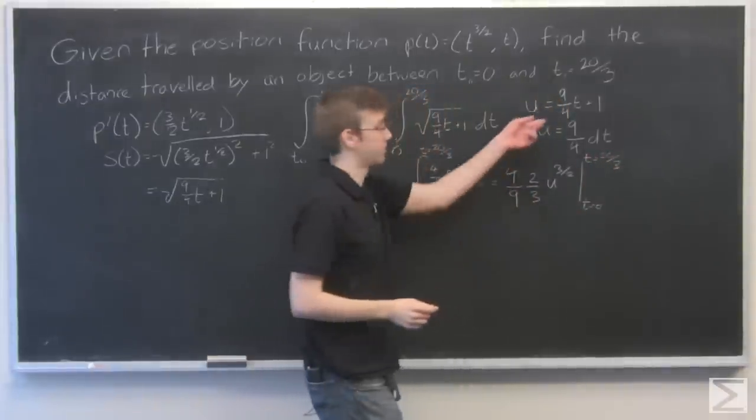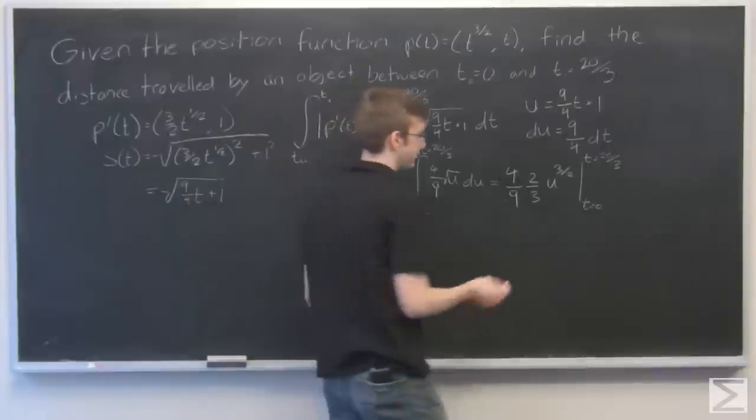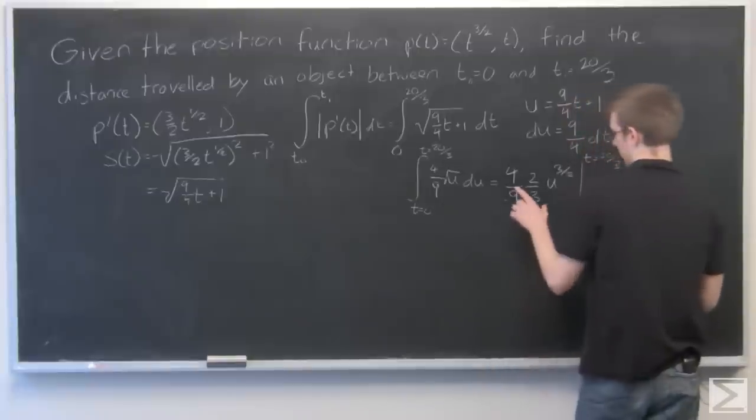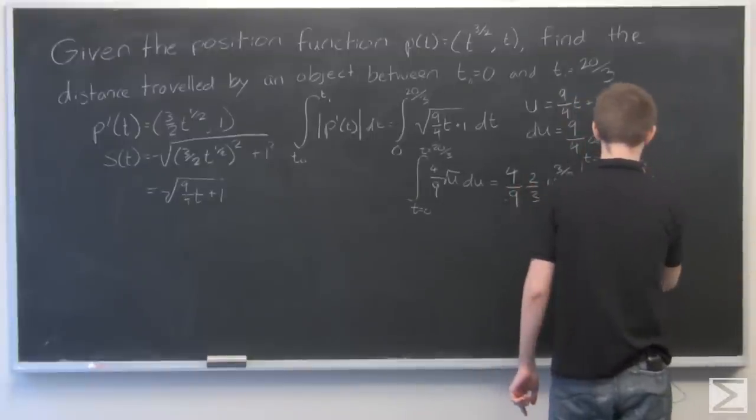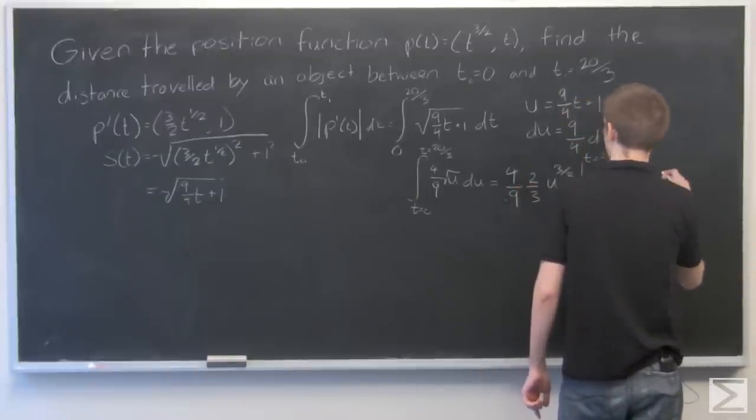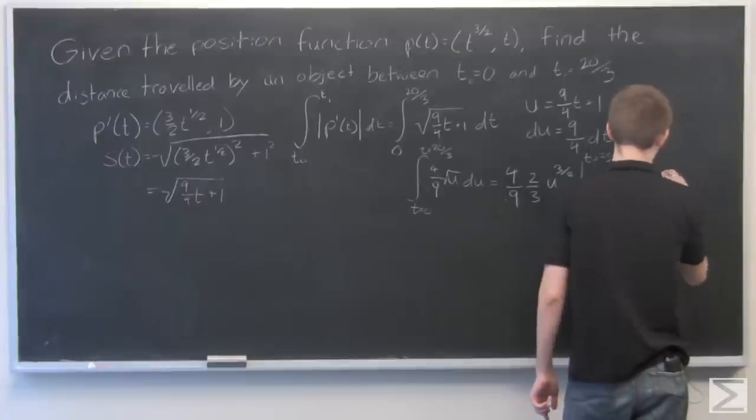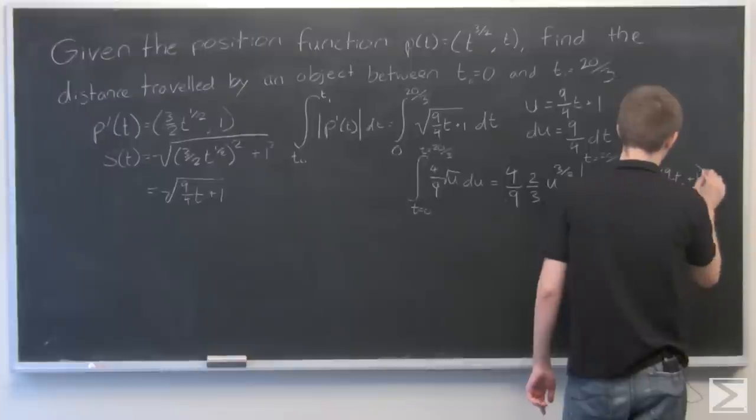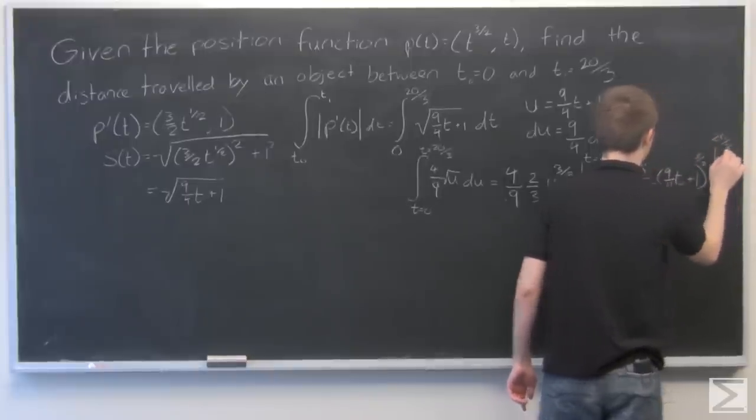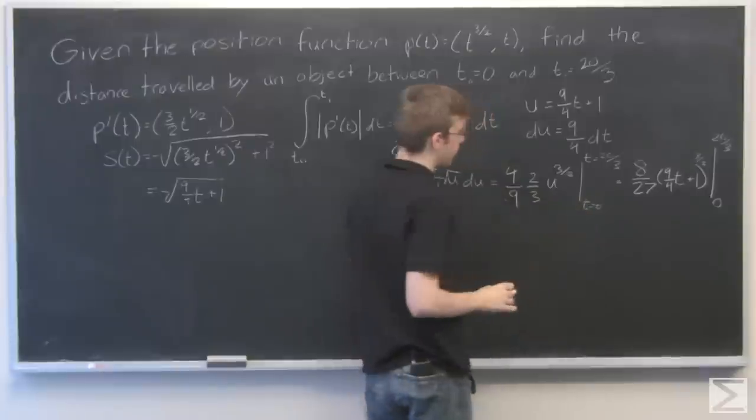So let's go put u back in. That's 8 over 27 times the quantity 9 fourths t plus 1 to the 3 halves, from 0 to 20 thirds.